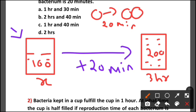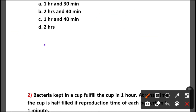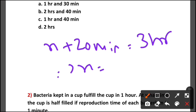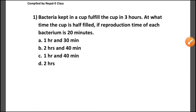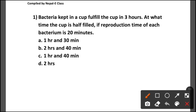So if you have 100 bacteria, which is half filled, one reproduction step later you get 200 bacteria — the full cup. So: x plus 20 minutes equals 3 hours, therefore x equals 3 hours minus 20 minutes, which equals 2 hours and 40 minutes. That is Option B — 2 hours and 40 minutes — which is our correct answer.